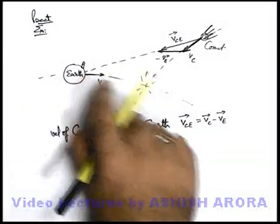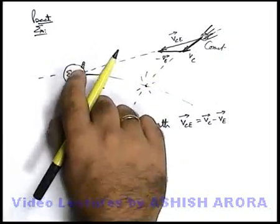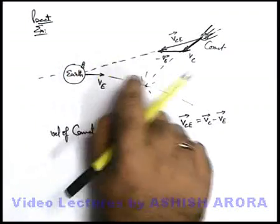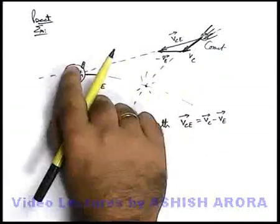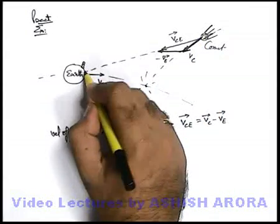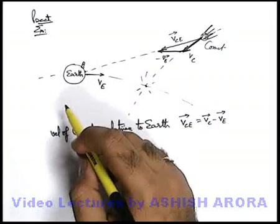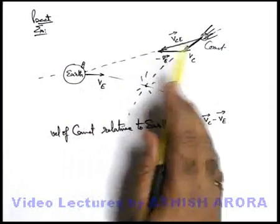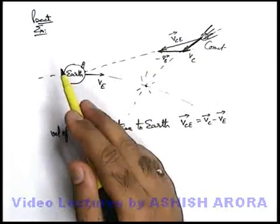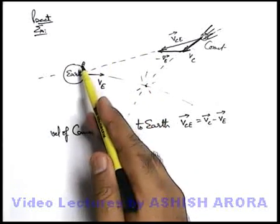So actual collision is going to take place somewhere here, but this observer or the people on Earth will feel that as it is going to collide on Earth, they will feel that comet is directly coming toward the Earth and finally it is going to hit the Earth. So it is also verifying the analysis which we have just now done, that if two bodies are going to collide, then with respect to one body the other body must be moving directed towards the first body.